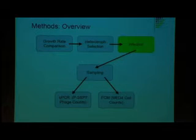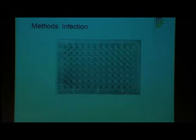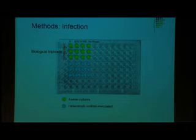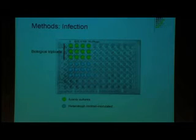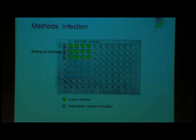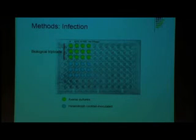Once I had selected those, I was ready to perform the infection, which I conducted in a 96-well plate using the MED4 Prochlorococcus strain and its phage counterpart PSSP7. Under each of the experimental conditions — the axenic and the heterotroph inoculated — I conducted the experiment under three MOIs, or multiplicities of infection, which is the ratio of infective phage to Prochlorococcus cells. Those conditions were X, X over 10, and X over 100 from the original concentration, in addition to a no-phage control, all inoculated in biological triplicate.